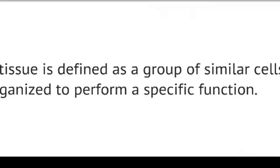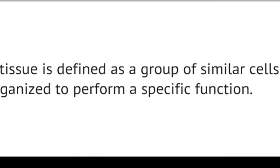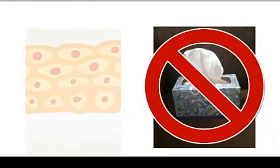Tissue is defined as a group of similar cells organized to perform a specific function. Our body is made out of tissue. The only animals which lack true tissue structures are sponges.